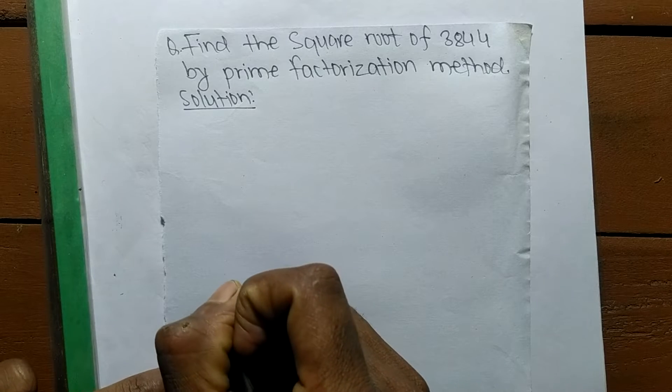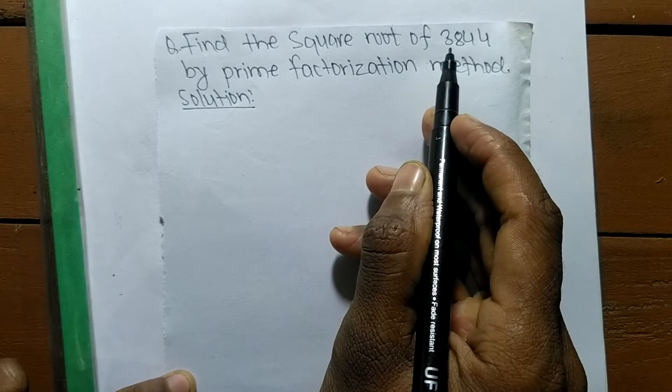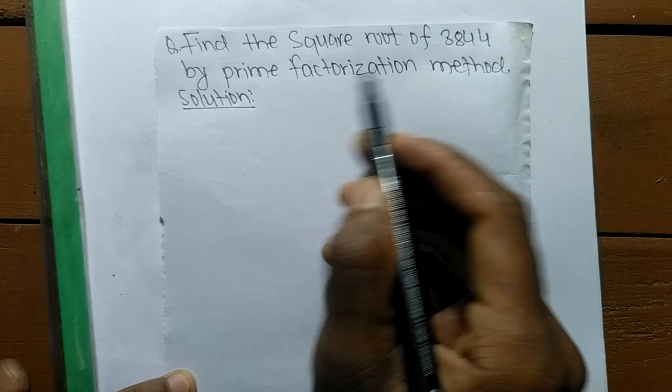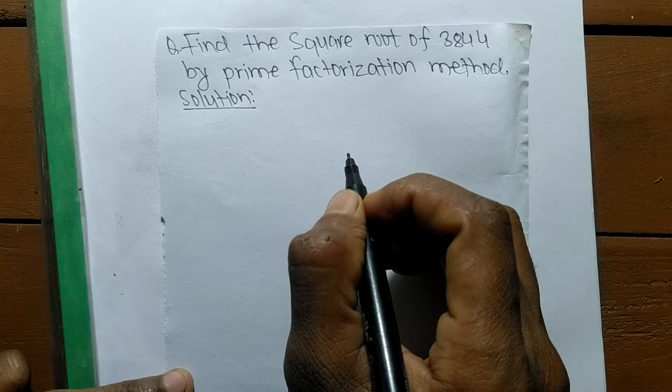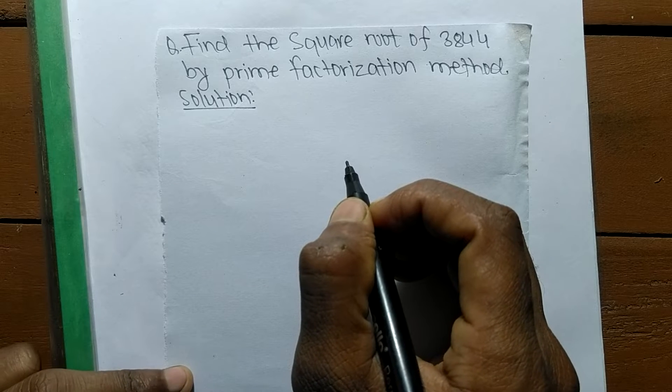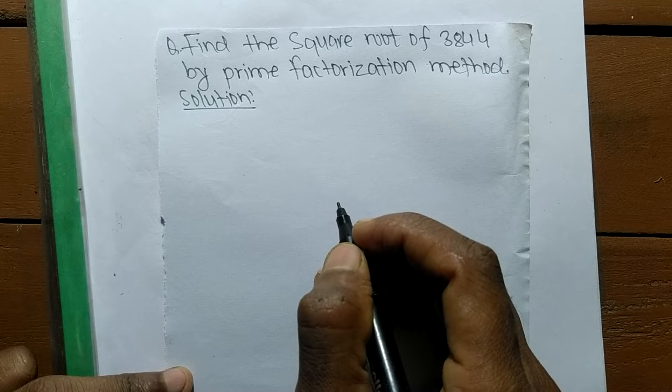Today in this video we shall learn to find the square root of 3844 by prime factorization method. To find a square root by prime factorization method, first we have to find out the prime factors of the given number.